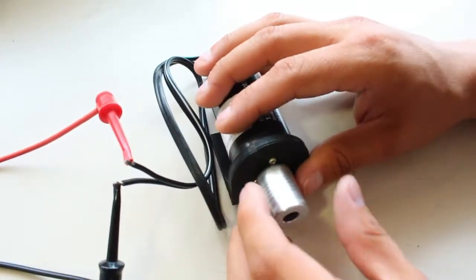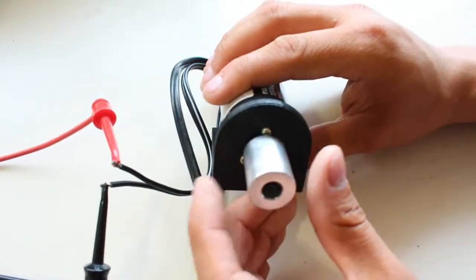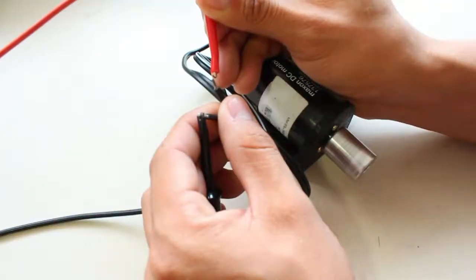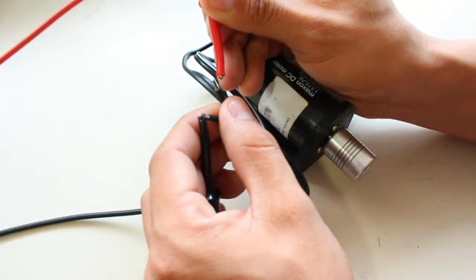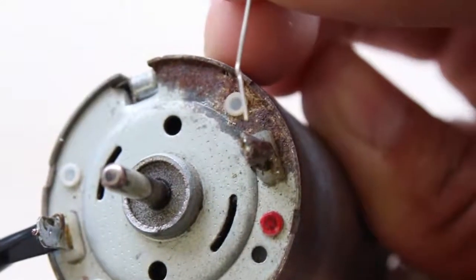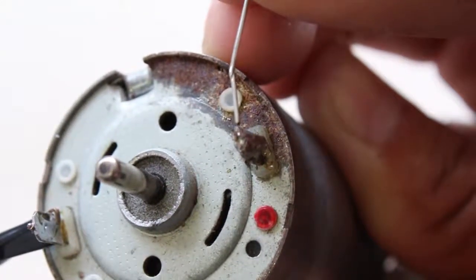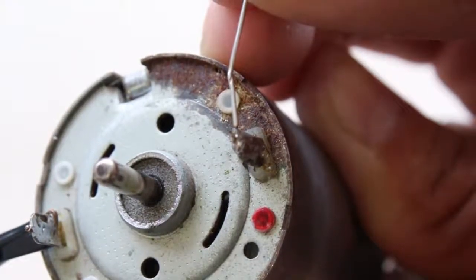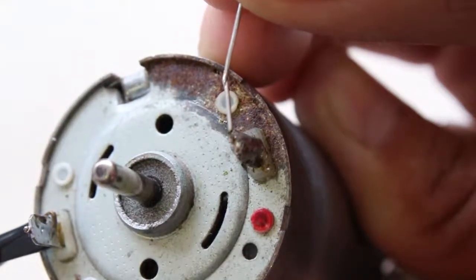The amount of generated torque by a DC motor depends on the applied current. When the motor is stopped, the generated torque is maximum, just like the motor current. That's the reason why every time we connect the motor terminals to a power supply, a little spark appears.